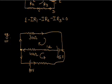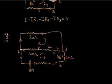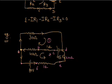We label the points A, B, C, D, E, and F on the circuit, with a 20-ohm resistor and a 1-ohm resistor also labeled. This gives us loop 1 and loop 2. We can apply Kirchhoff's loop law to any closed loop.